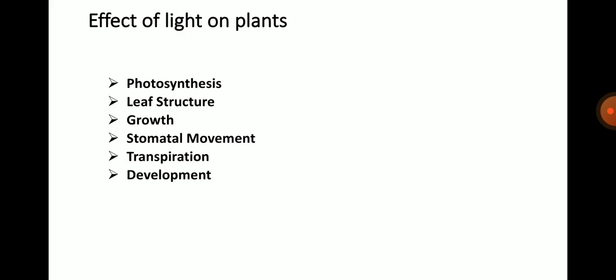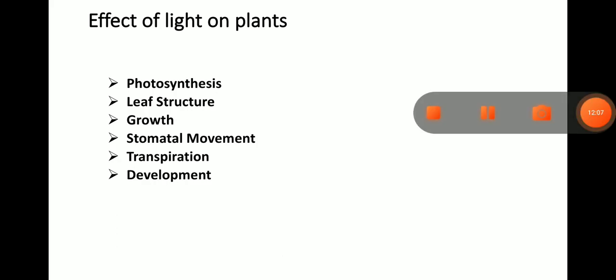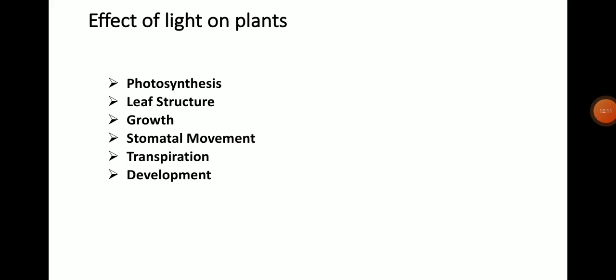Light affects plants and various metabolic processes such as photosynthesis, leaf structure, growth, stomatal movements, transpiration and development. Visible light is indispensable for photosynthesis, which is an efficient means by which energy from the abiotic world is trapped for utilization by the biotic world. The chlorophyll of green plants traps the solar energy, and carbon dioxide is combined with water to form carbohydrates. The rate of photosynthesis depends on the wavelengths of light.